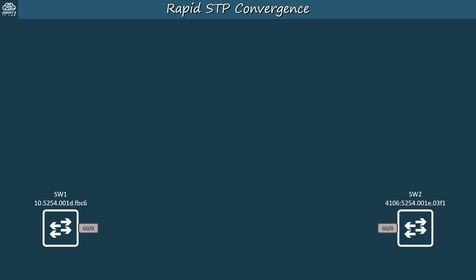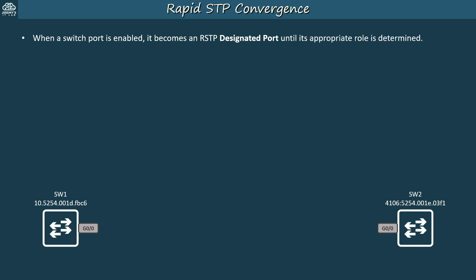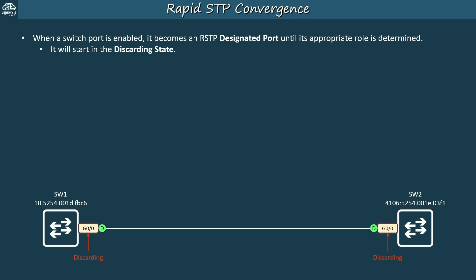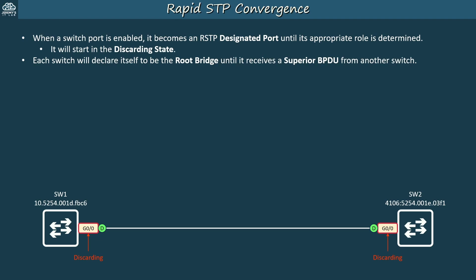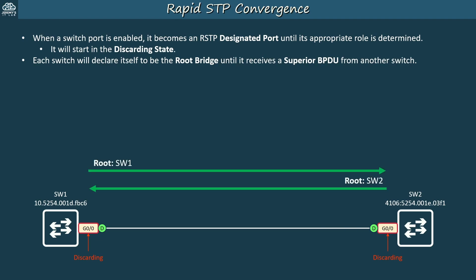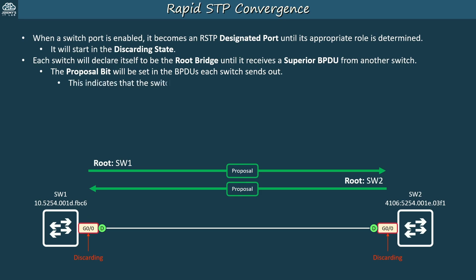Now let's see how RSTP speeds up convergence using its sync process. Just like in STP, when a switch port is enabled, it becomes an RSTP designated port until its appropriate role is determined. Each port will start in the discarding state, which includes the functions of both the STP blocking and listening states. As before, each switch declares itself the root bridge until it receives a superior BPDU. But here's a major difference: the proposal bit is set in these BPDUs. This is how an RSTP switch attempts to initiate the sync process — the proposal bit indicates that the switch is proposing itself as the designated bridge for the segment.